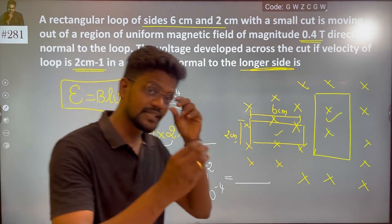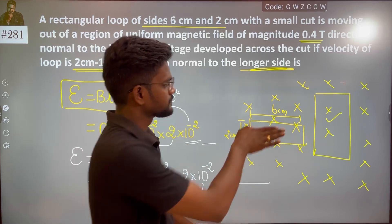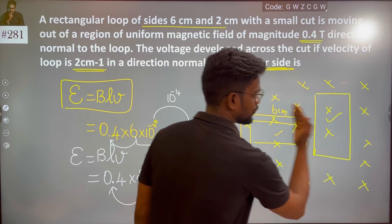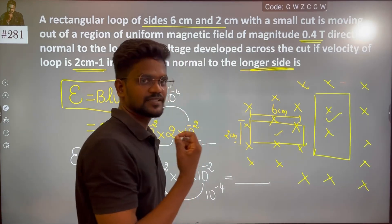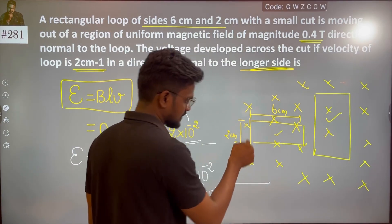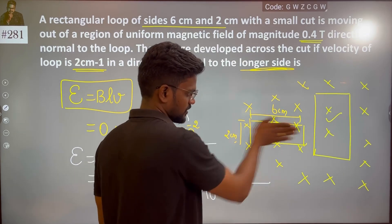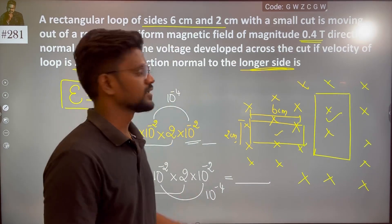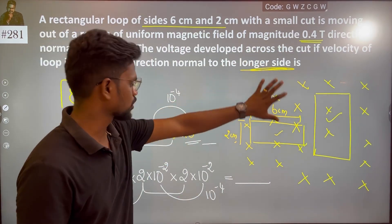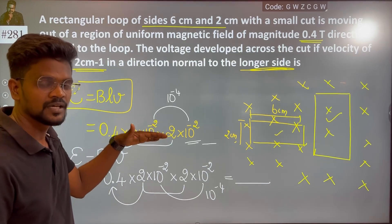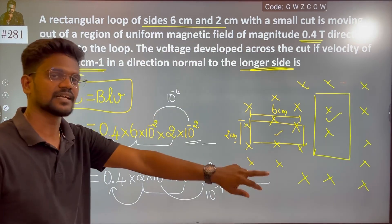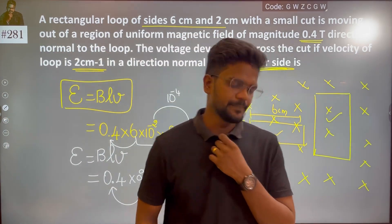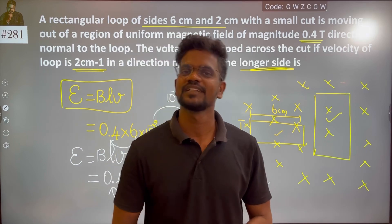So we are talking about the longer side — either this side or that side. The longer side of 6 cm is the relevant one, while the other is the shorter side. If you consider the shorter side, you can go with the other answer. It is a very simple concept — if you have any doubt, it is quite common.